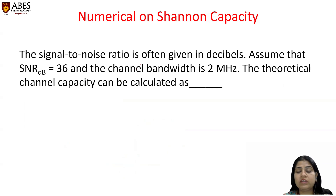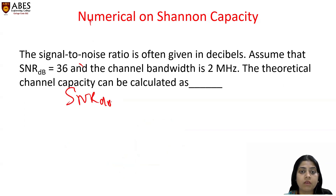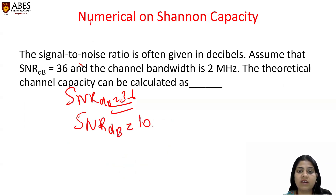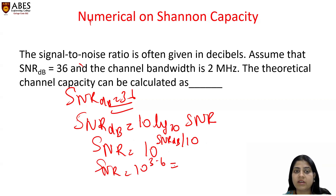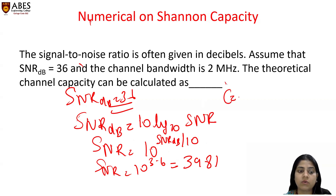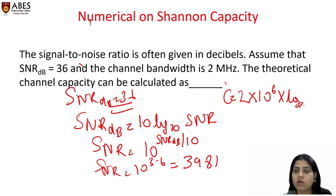Next, SNR is often given in decibels. If SNR_dB is given, you can calculate SNR using: SNR_dB = 10 × log₁₀(SNR), so SNR = 10^(SNR_dB / 10). For example, SNR ≈ 3981. Then capacity = 2 × 10⁶ × log₂(1 + 3982) ≈ 24 megabits per second.